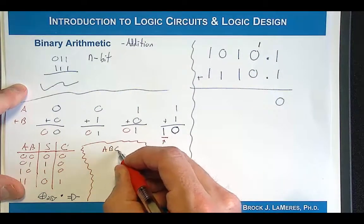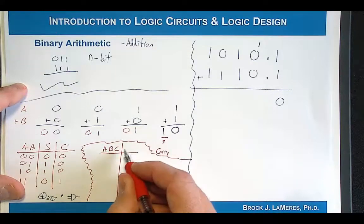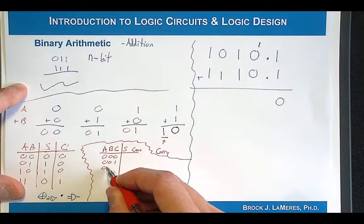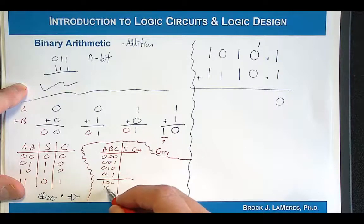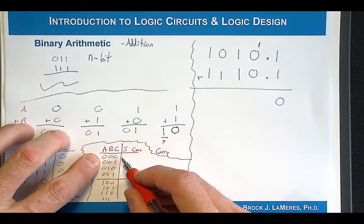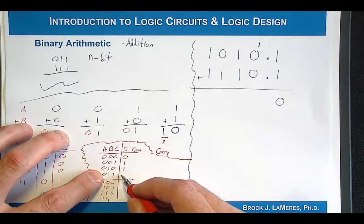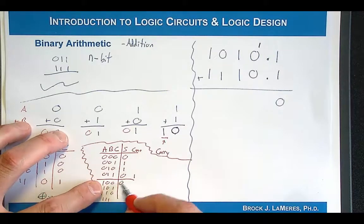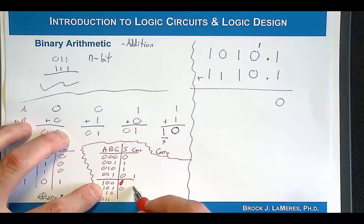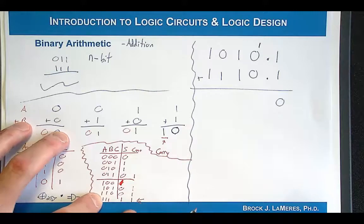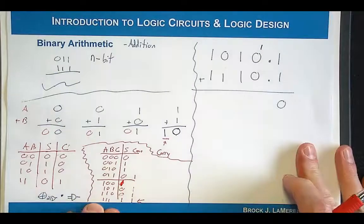We're going to have inputs A, B, and C, where C is the carry-in, and we'll have a sum and a carry-out. Let's put all possible combinations together: 0+0+0=0; 0+0+1=1; 0+1+0=1; 0+1+1=0 with a carry; 1+0+0=1; 1+0+1=0 with a carry; 1+1+0=0 with a carry; and 1+1+1=1 with a carry. That last case is the unique one where we have a sum of 1 with a carry.